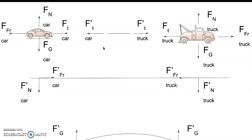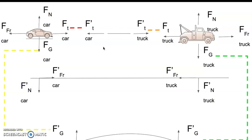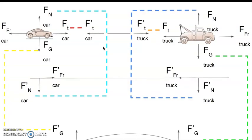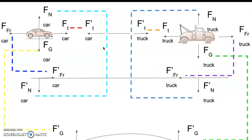Now let's identify the force pairs. The force tensions are force pairs: as the car pulls on the cable, the cable pulls on the car, and same for the truck. The force of gravity pairs: as the Earth pulls down on the car, the car pulls up on the Earth; same thing with the truck. The force normals: as the surface pushes up on the car and the truck, they both push down on the surface. And lastly, the force of frictions: as there is friction between the truck and the surface and between the car and the surface, there is also friction back on the truck and the car from the surface.